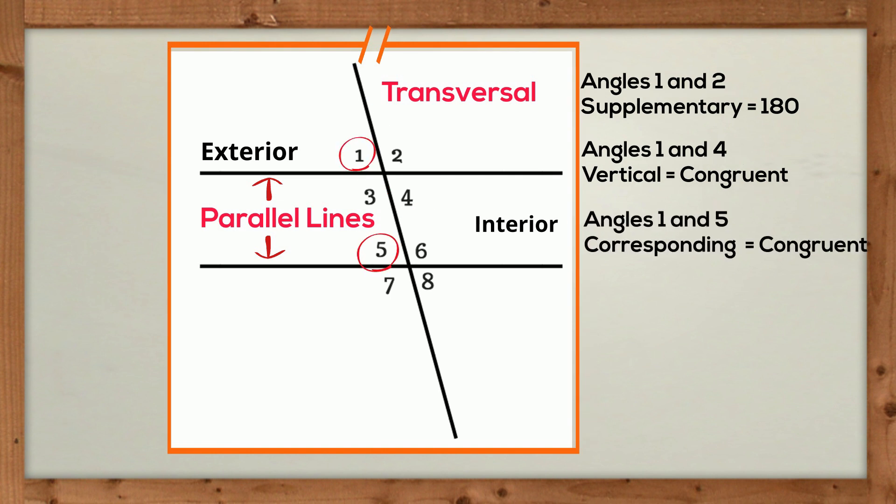Angles 1 and 5 are called corresponding angles, and they also have congruent angle measures.